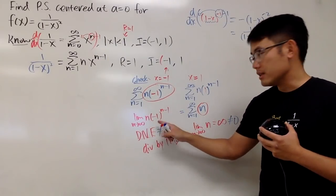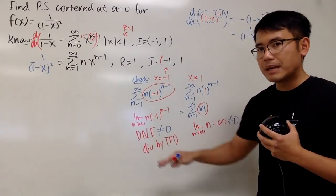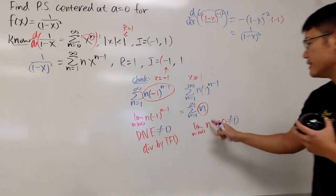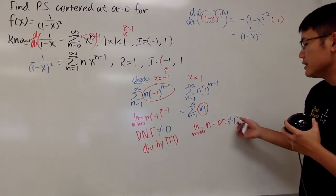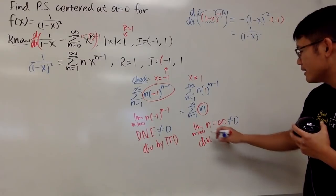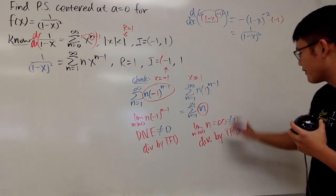This right here, technically it's not infinity, because here you have -1, positive 1, so it kind of bumps up and down. So the answer to this limit doesn't exist. But the answer to this limit is infinity. But anyway, this is also not 0. So we get divergent when x equals 1, and this diverges by test for divergence.